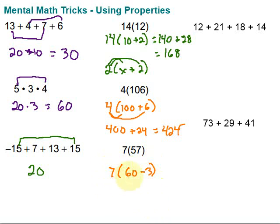Well, 7 times 60, 7 times 6 is 42. Tack that 0 on. So, 420. And then, 7 times 3 is 21. So, 420 minus 21 is 399. No calculator needed. Using the good old distributive property.